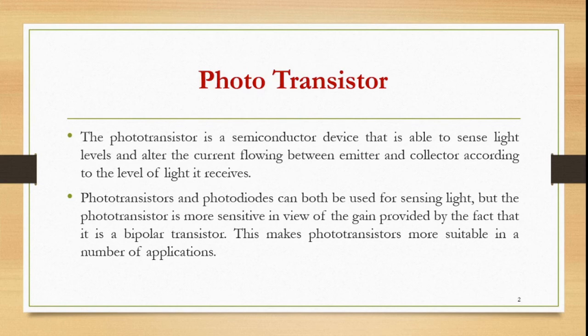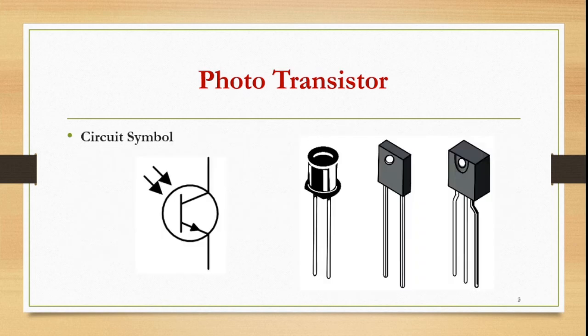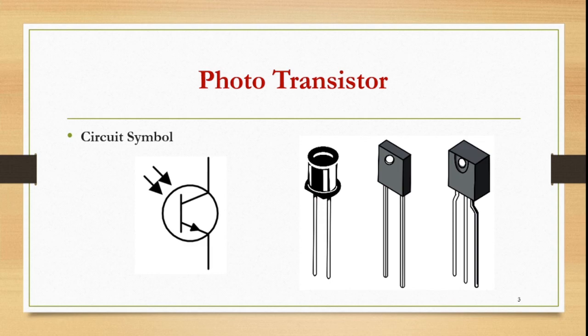This makes the phototransistor more suitable for a number of applications. You can see the circuit symbol of the phototransistor where the collector terminal is connected to VCC, the emitter terminal is connected to ground, and the base terminal is open. That's why in various packages of the phototransistor, they may have two leads or three leads. Two leads means the base terminal is open; three leads means the base terminal is present but is said to remain open.